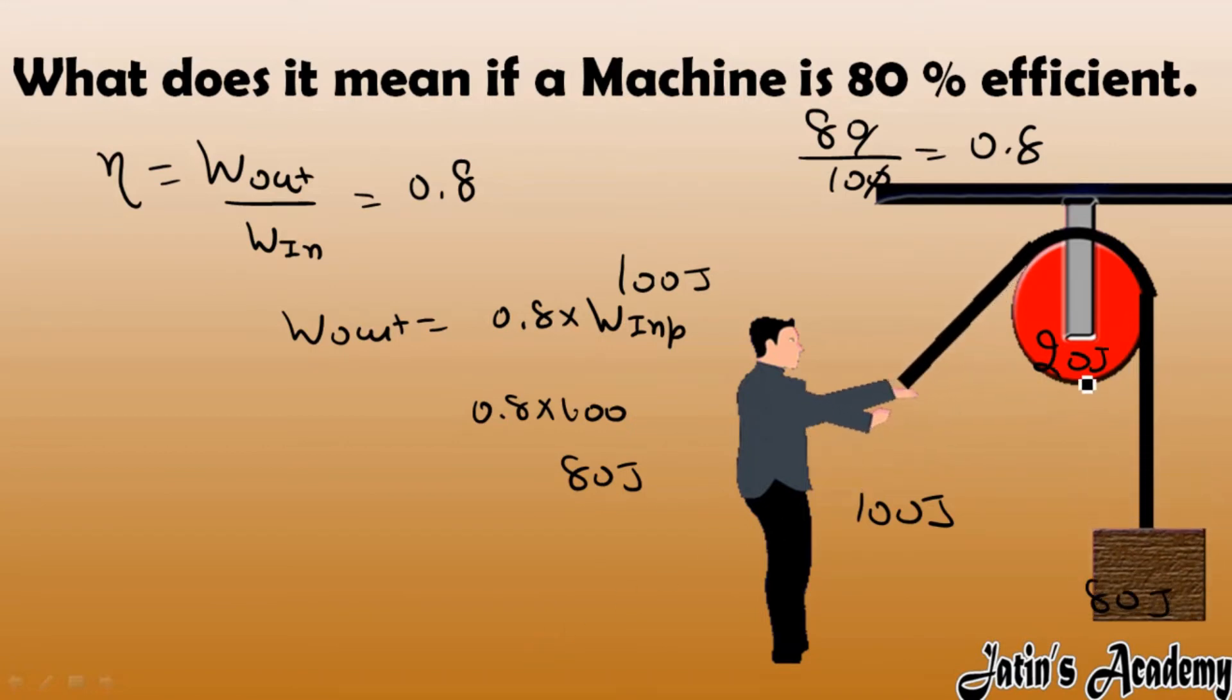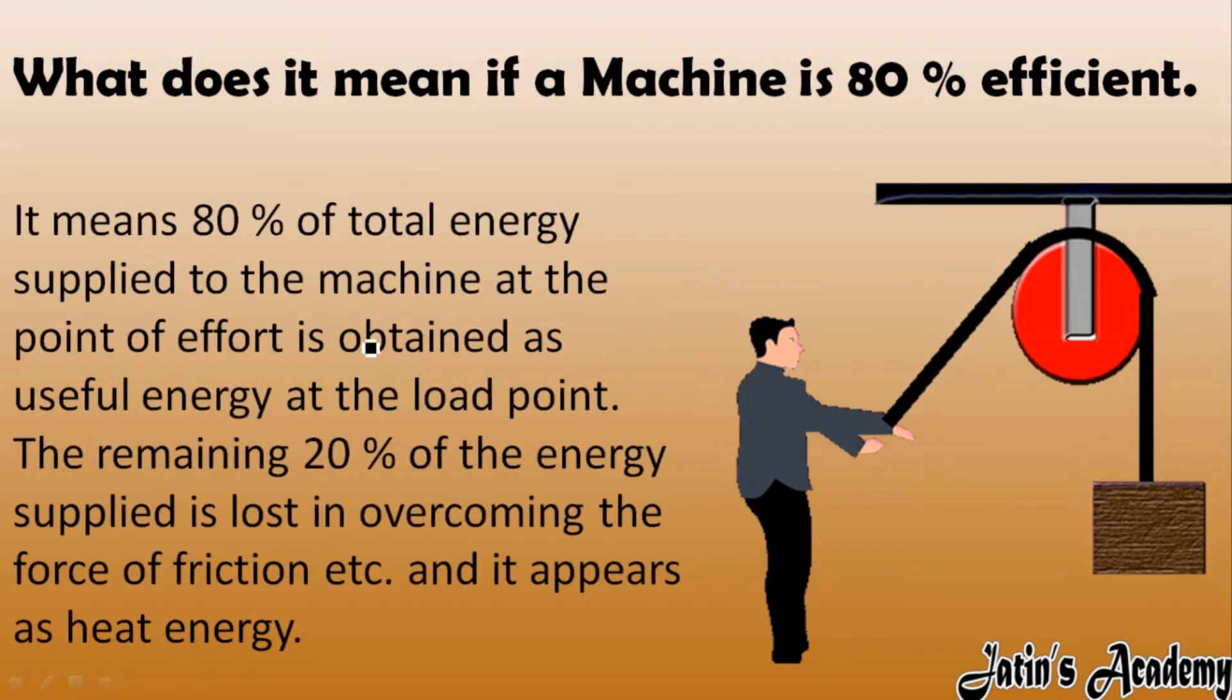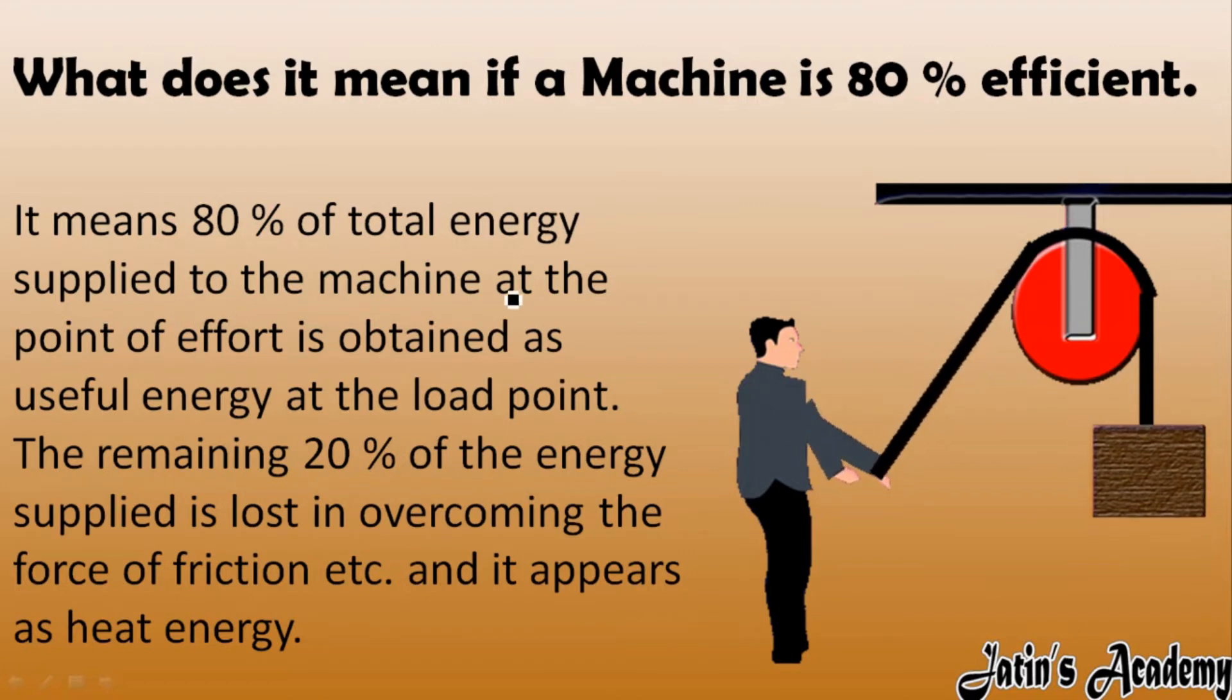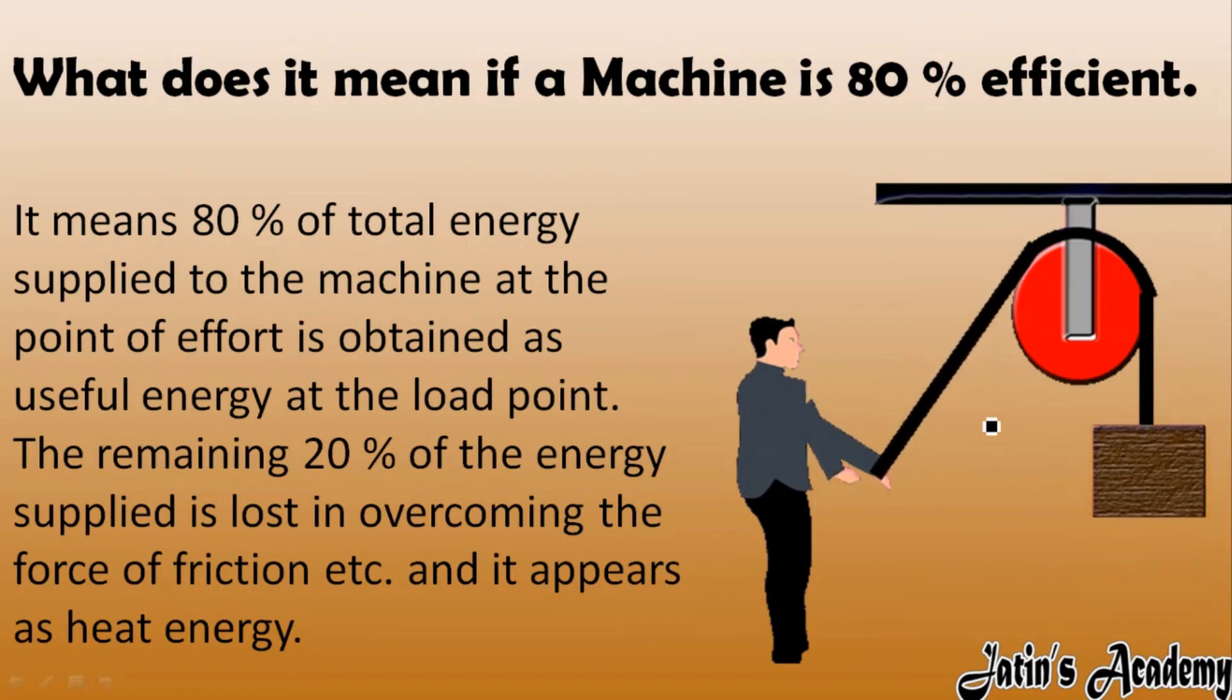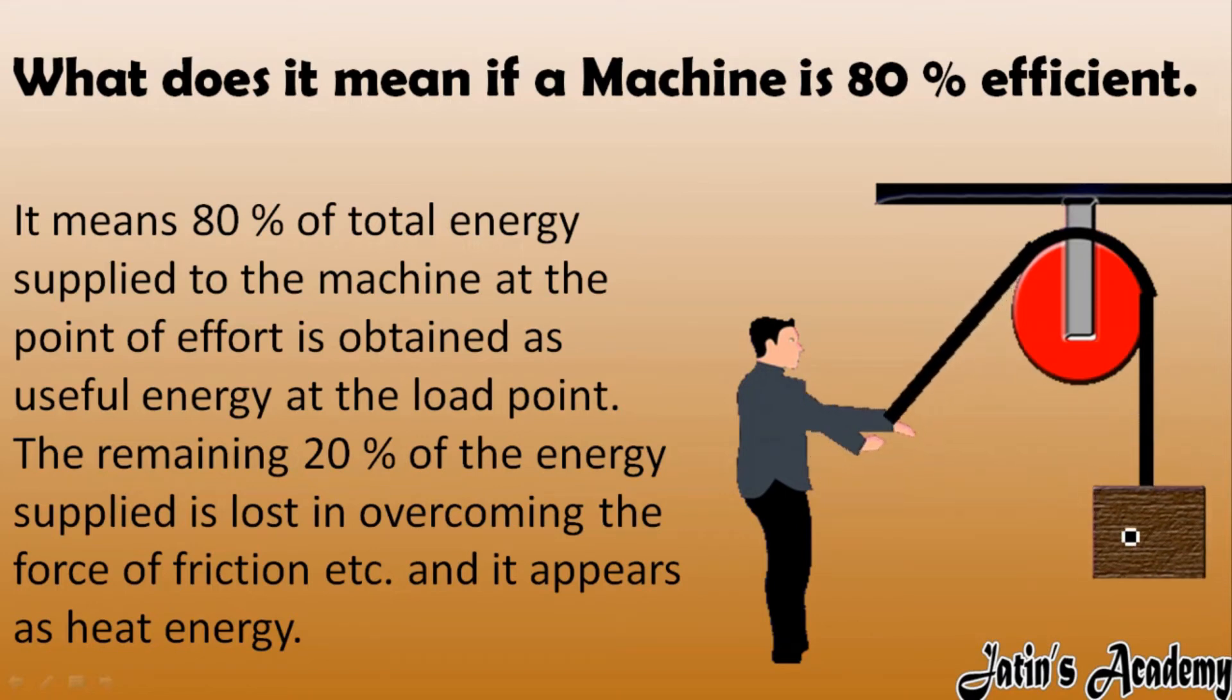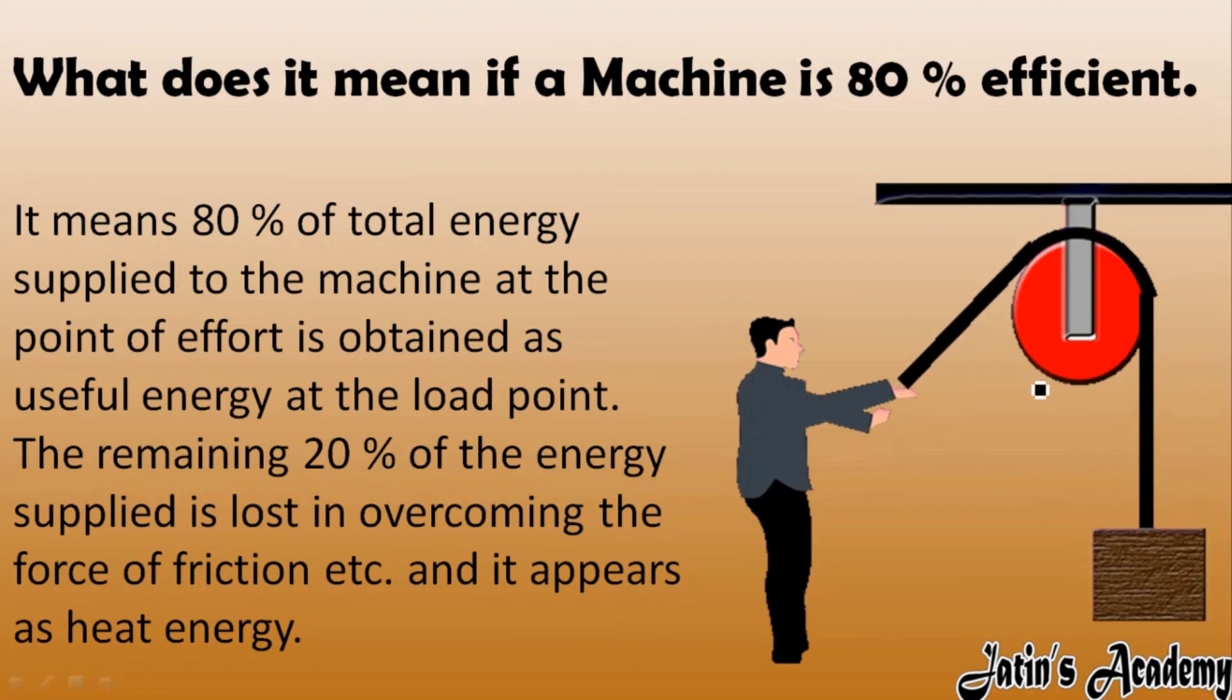If a machine is 80% efficient, it means that 80% of the total energy supplied to the machine at the effort point is obtained at the load point, and the remaining 20% of energy supplied is lost in overcoming the force of friction.